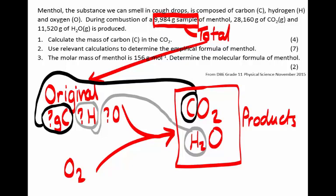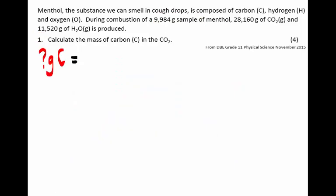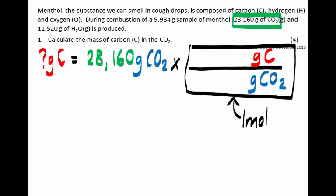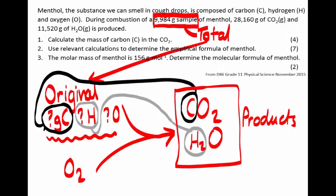To get the empirical or the molecular formulae, we need to convert the mass ratio into a particle ratio. The first step is to find the mass ratio, so we calculate the mass of carbon inside the carbon dioxide. How many grams of carbon are in 28.16 grams of carbon dioxide? Our conversion factor has grams CO₂ at the bottom and grams carbon at the top, both referring to one mole of CO₂. One mole of CO₂ has a mass of 44 grams, and the carbon in there has a mass of 12 grams. We get an answer of 7.68 grams of carbon — so the original compound contained 7.68 grams of carbon.